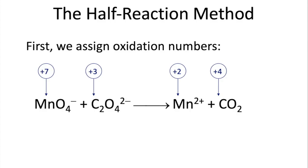So let's do an example. In this reaction, our manganese goes from +7 to +2 — the oxidation number is going down, so it's getting reduced. Our carbon is going from +3 to +4 — the oxidation number is going up, so it's getting oxidized. We're going to separate out the pieces that are part of the reduction and part of the oxidation half-reaction.